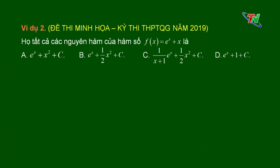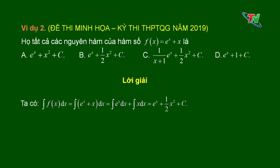Tiếp tục với ví dụ số 2 — một câu trong đề thi minh họa kỳ thi Trung học Thống Quốc gia năm 2019. Họ tất cả các nguyên hàm của hàm số f(x) = eˣ + x. Tương tự ví dụ 1, áp dụng bảng nguyên hàm cơ bản và tính chất nguyên hàm: ∫(eˣ + x)dx = ∫eˣ·dx + ∫x·dx = eˣ + (1/2)x² + C. Khi đó ta chọn đáp án đúng là đáp án B.